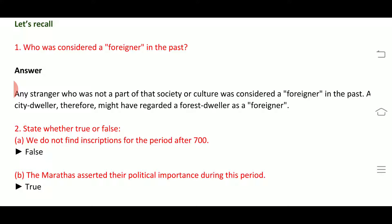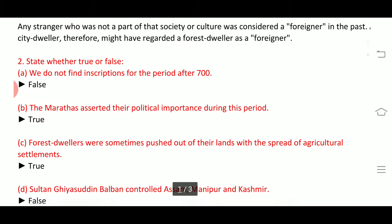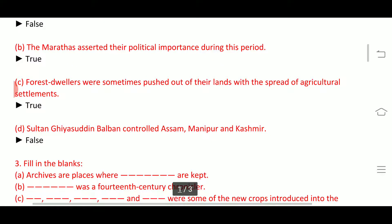Second is true and false. First statement: we do not find inscriptions for the period after 700 — this is false. The Marathas asserted their political importance during this period — this is true. Forest dwellers were sometimes displaced from their lands with the spread of agriculture — this is true. Sultan Giyasuddin Balban controlled Assam, Manipur and Kashmir — this is false.